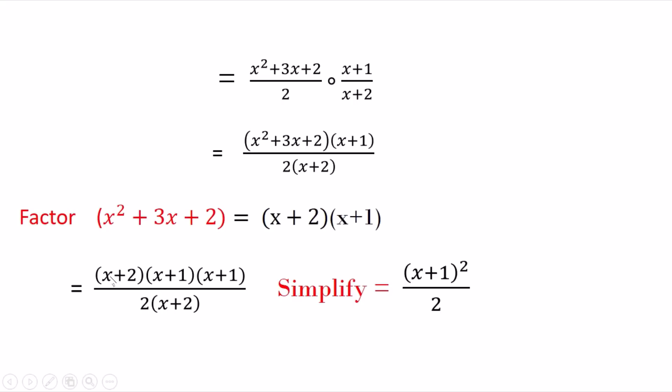So the new form becomes x plus 2 times x plus 1 times x plus 1. Where did I get this? This is from here, but those two are from this one. And the whole thing becomes divided by 2 times x plus 2. So the x plus 2 goes with x plus 2, so it cancels.